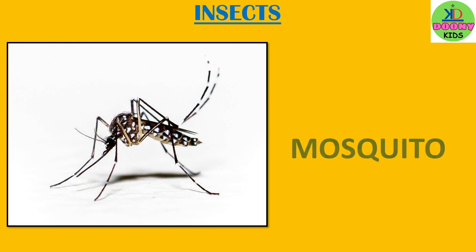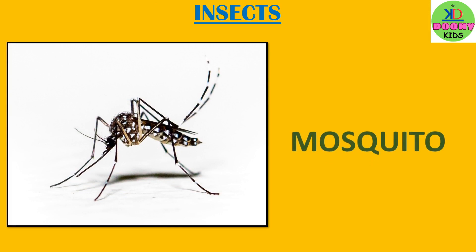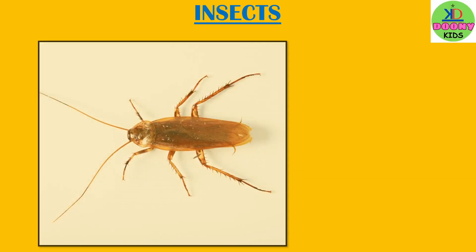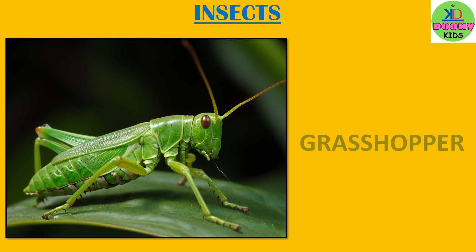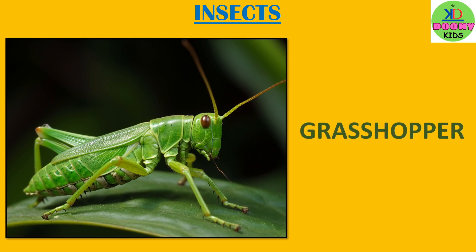This is mosquito — M-O-S-Q-U-I-T-O — mosquito. This is a cockroach — C-O-C-K-R-O-A-C-H — cockroach. This is grasshopper — G-R-A-S-S-H-O-P-P-E-R — grasshopper.